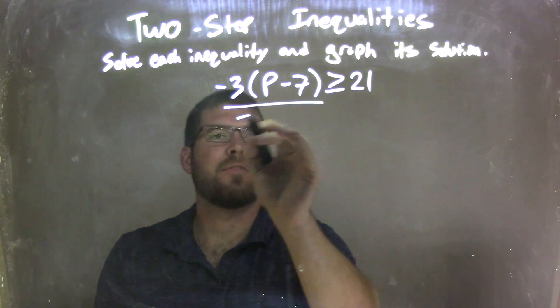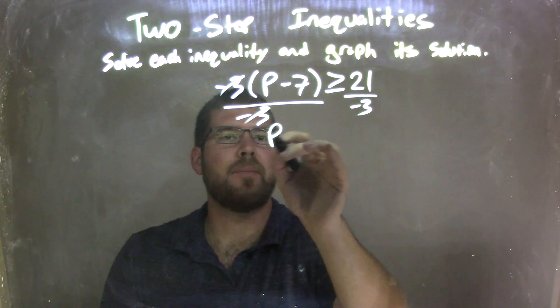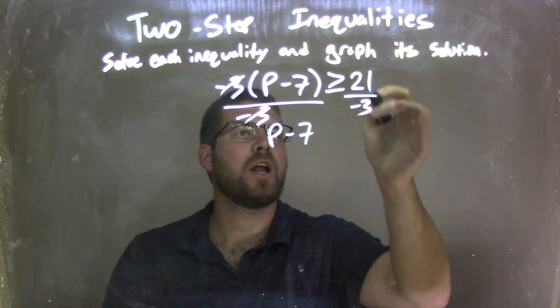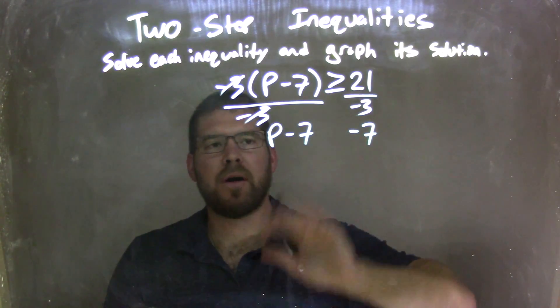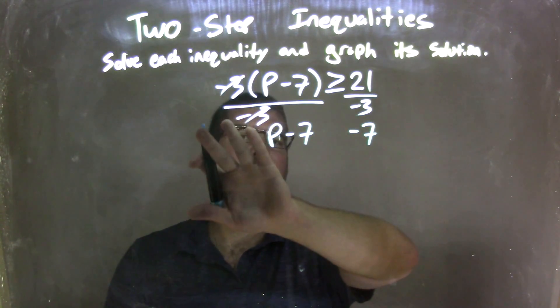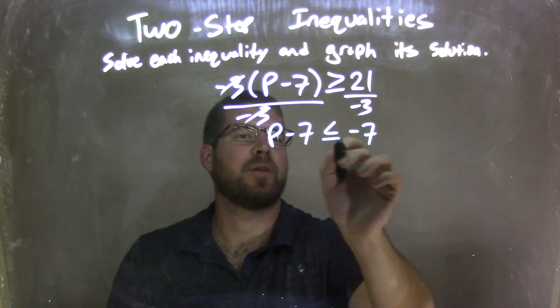First step, divide by negative 3 to both sides. That eliminates the negative 3s out here, giving me a P minus 7 on the left, and 21 divided by negative 3 is a negative 7. But my inequality flips because I divided by a negative over the inequality, so it's not a greater than or equal to sign, but a less than or equal to sign.